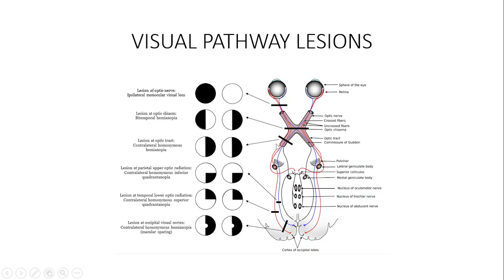Now let's move on to optic radiations. We are still at the left side. The superior left optic radiations have been affected. Since they are superior, they are traversing through the parietal lobe. If they are superior, the visual field defect will be inferior. And if the organic lesion is at the left, the visual field defect will be at the right side.